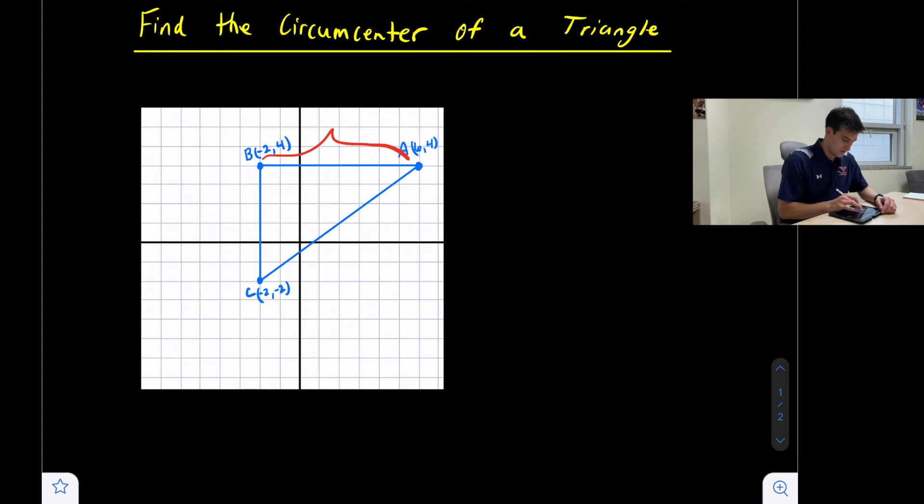This is one, two, three, four, five, six, seven, eight units. Since this is eight units, the midpoint would be four units along. So one, two, three, four. Our midpoint would be right there.